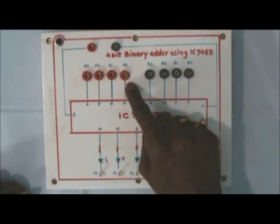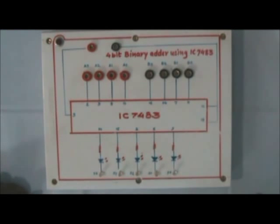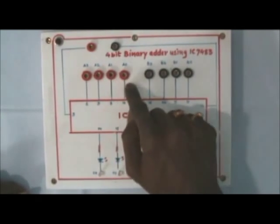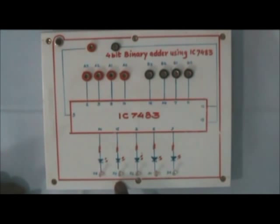A3, A2, A1, A0 is one binary number. B3, B2, B1, B0 is another binary number. If you add these two: A3 A2 A1 A0 plus B3 B2 B1 B0, you get S4, S3, S2, S1, S0 as the result.